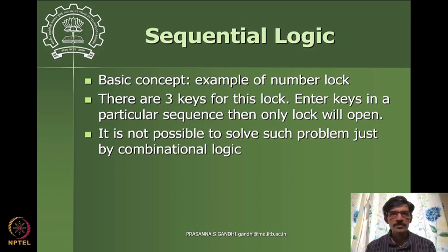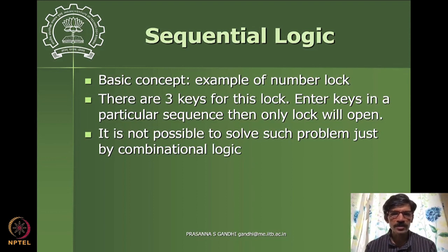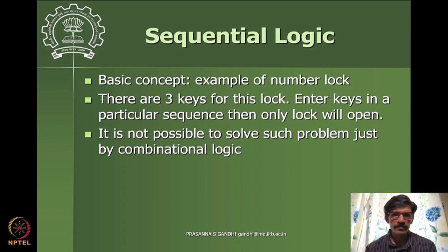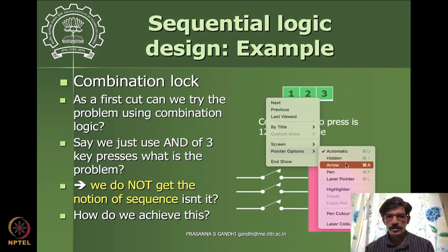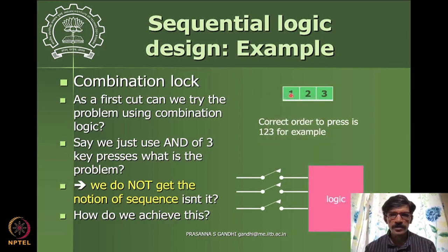We will develop this concept using the example of a number lock. This is a simple, primitive number lock that has three keys, and you are asked to enter the keys in some particular sequence — only then will the lock open. So the sequence is: key one first, key two second, and key three last; any other sequence and the lock cannot open.